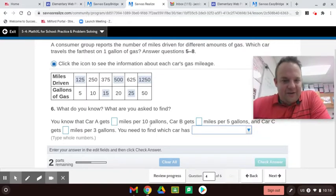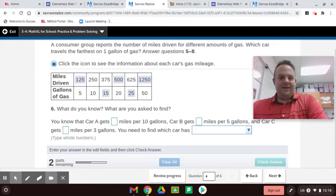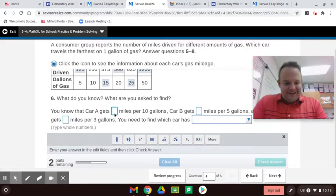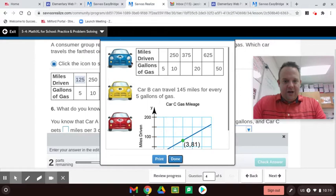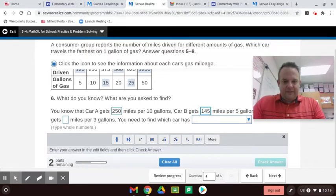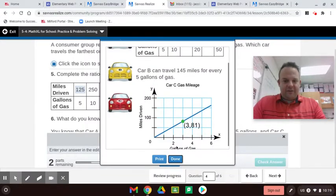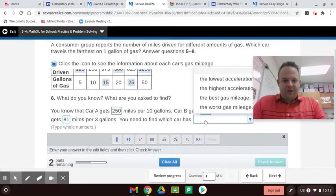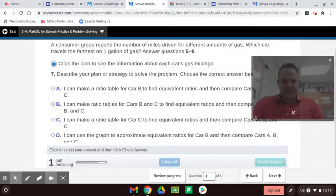So car A gets how many miles per 10 gallons? Let's just check that. So car A gets per 10 gallons 250 miles. So that's what's known as the known ratio, that is the known ratio. And car B gets, let's go back and check that, 145 miles per 5 gallons in my case. And car C gets 81 miles per 3 gallons. So all you got to do is just check those for those cases. You will need to find which car has the best gas mileage, not the worst.